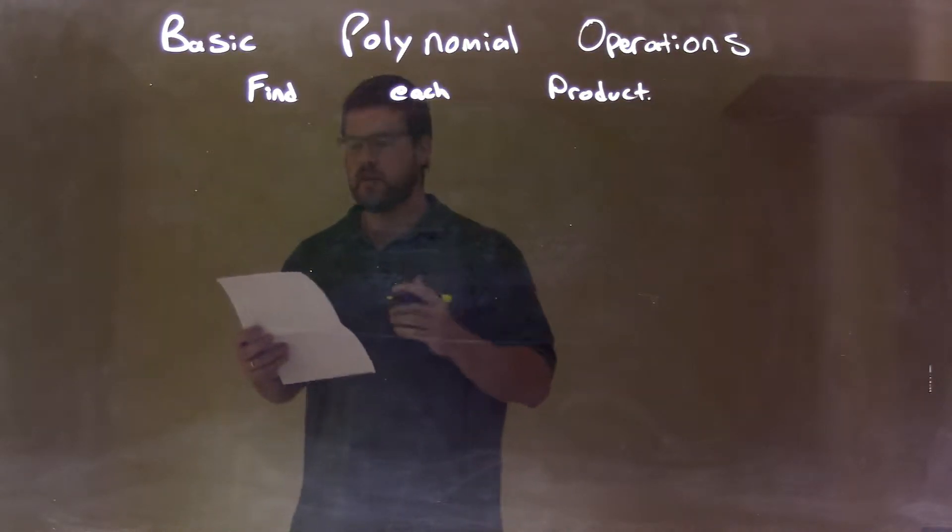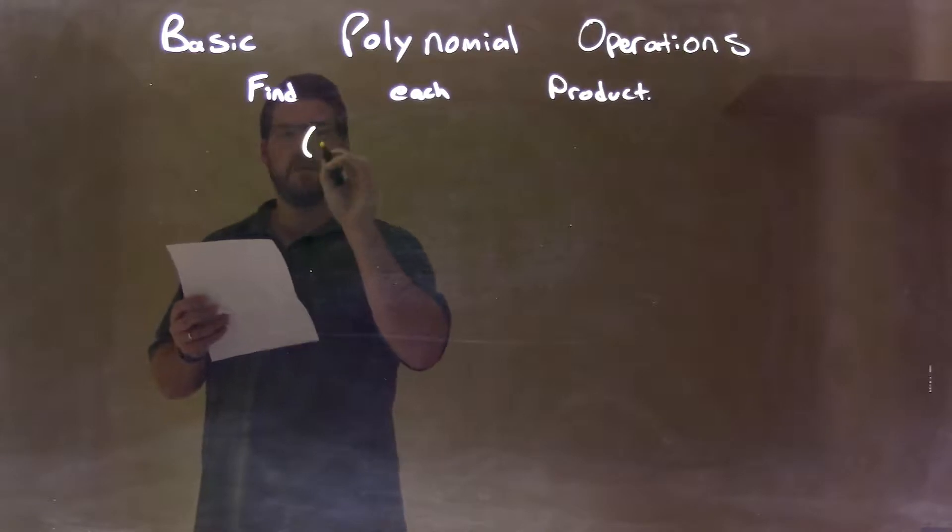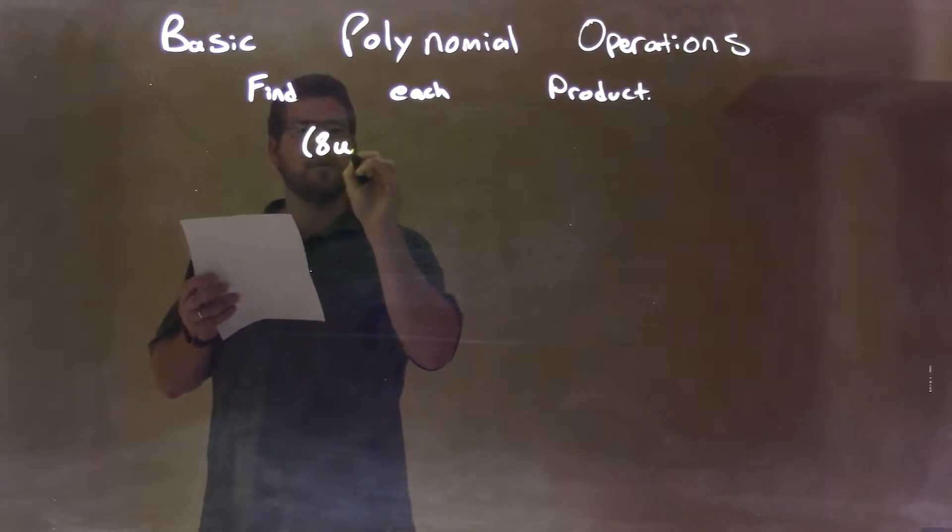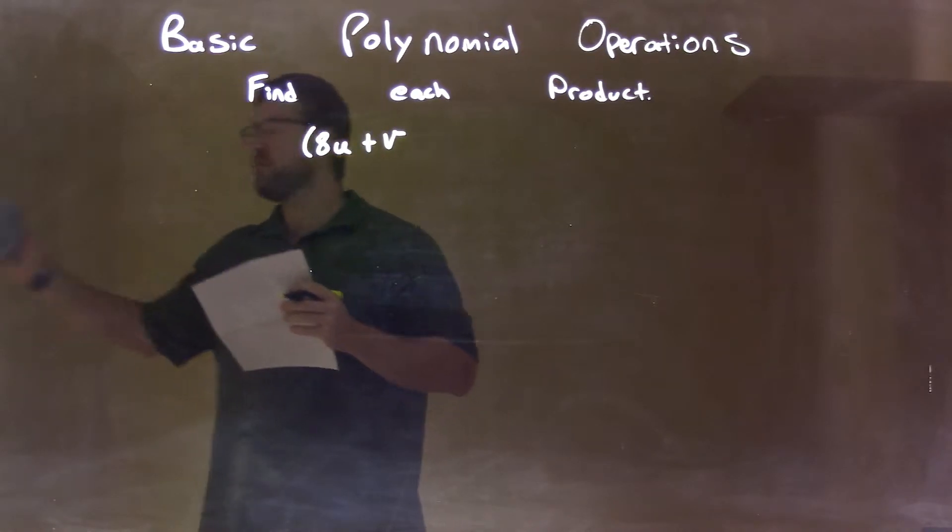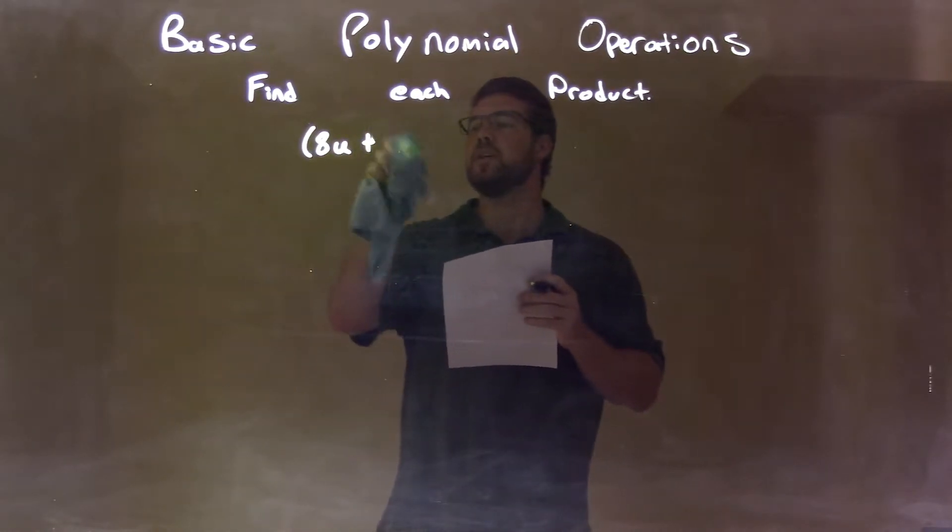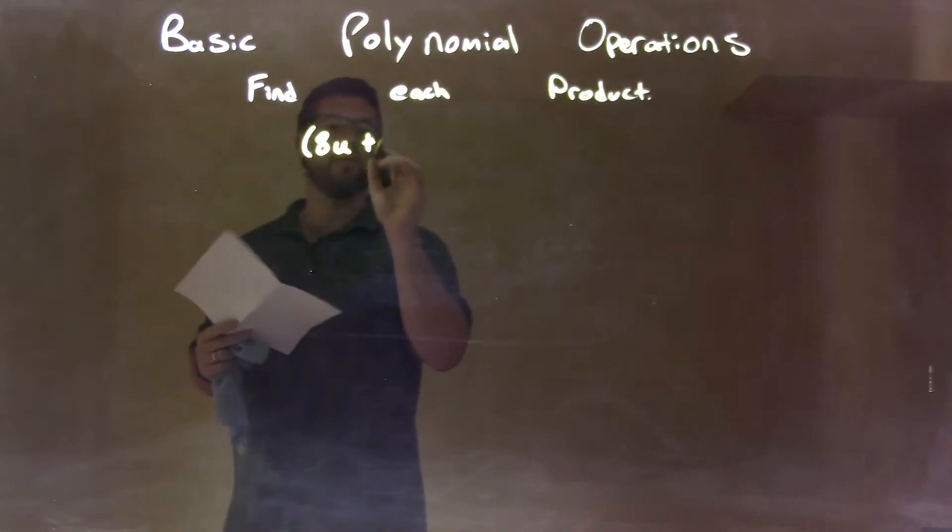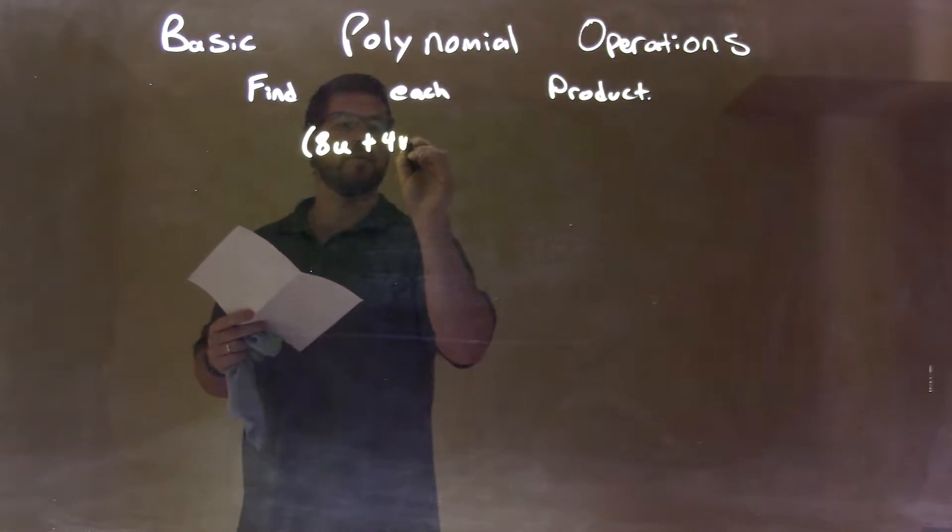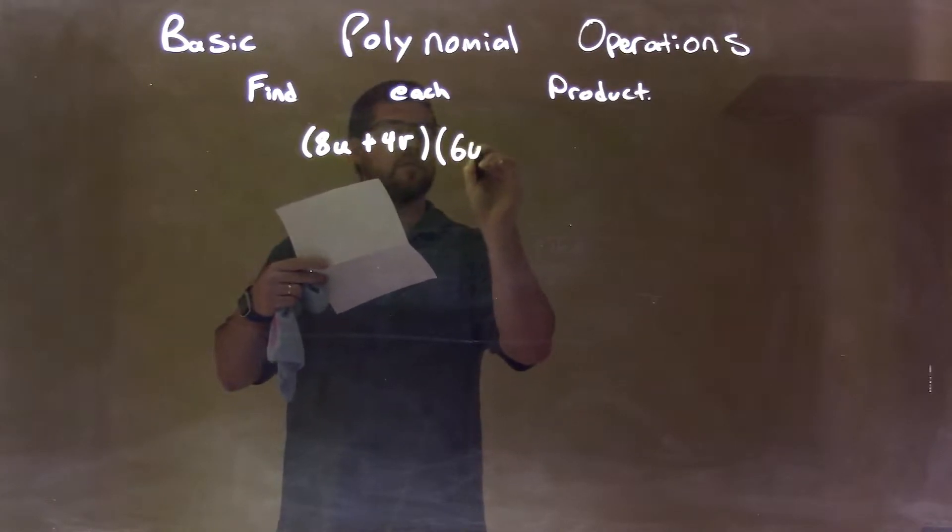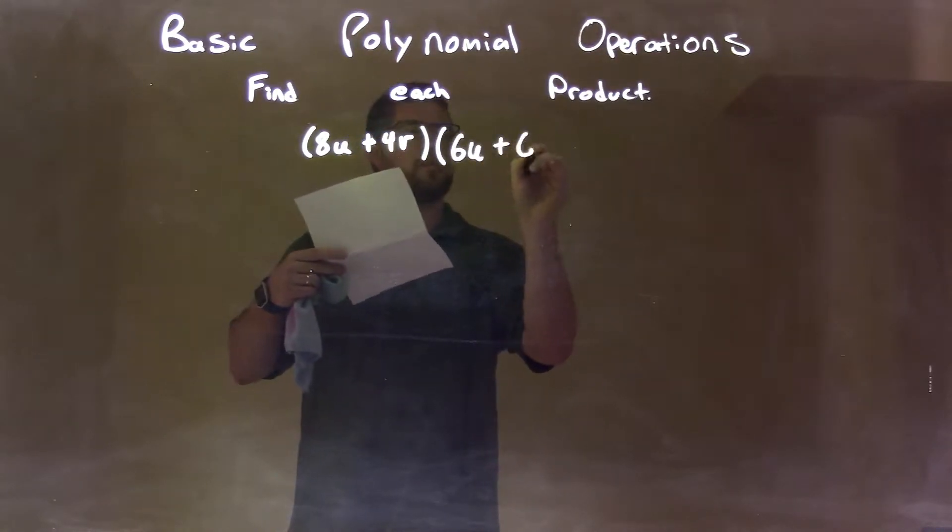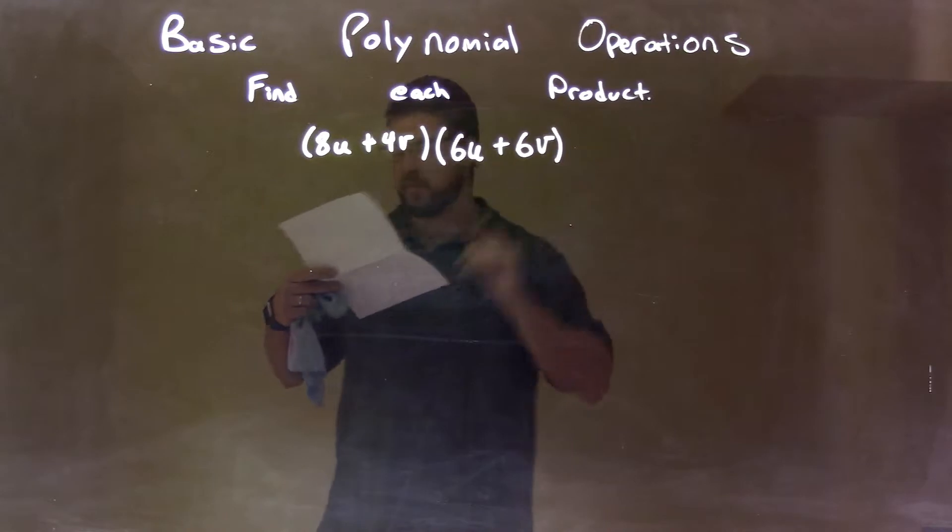So if I was given this product: 8u plus 4, oops, 4v—so 8u plus 4v, times 6u plus 6v.